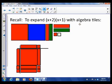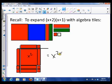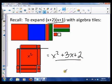So our answer there was x squared, because that's an x squared, plus 1, 2, 3x tiles, plus 1, 2. So we could go from here to here with algebra tiles.